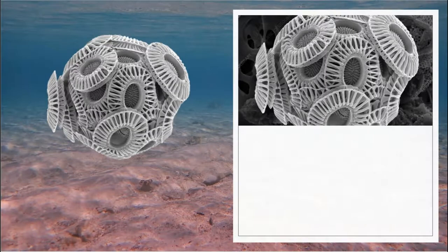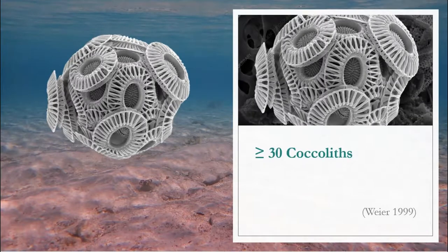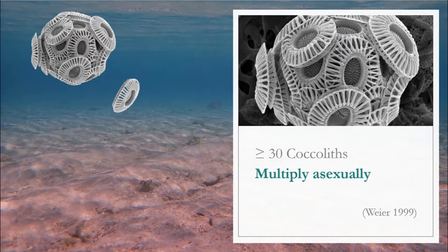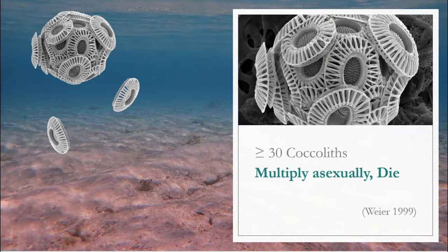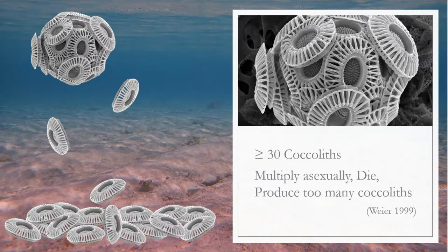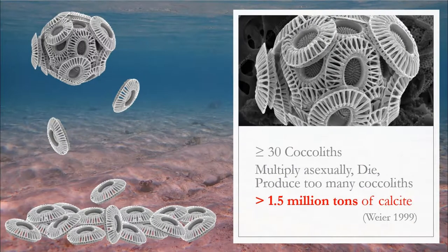A single coccolithophore is surrounded by at least 30 coccoliths, which are dumped into the surrounding water when coccolithophores multiply asexually, die, or produce too many coccoliths. It is estimated that the amount of calcite dumped by coccolithophores in a year exceeds 1.5 million tonnes.